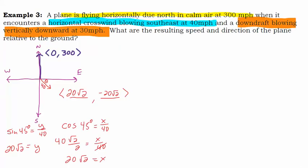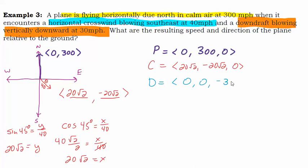Let's start representing these now in three dimensions. Our plane we could write as the vector (0, 300, 0). Our horizontal crosswind, call it C, we can represent with (20√2, -20√2), then we'll just throw on the zero. And our downdraft, call that vector D, is (0, 0, -30). It's not moving in the x and y direction—it's going straight down with a z component of -30.